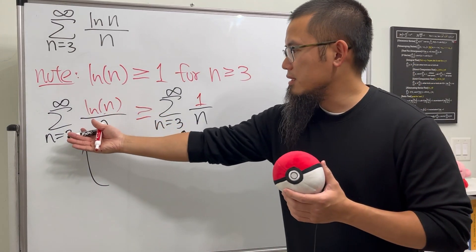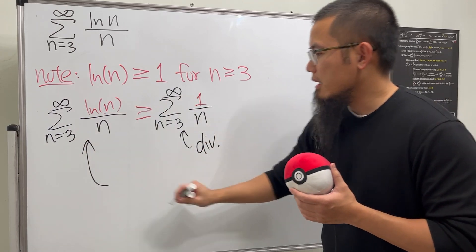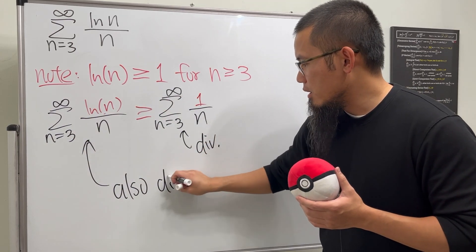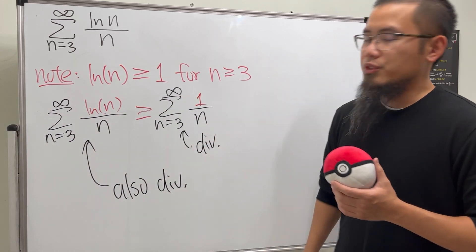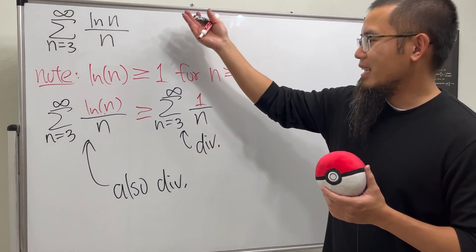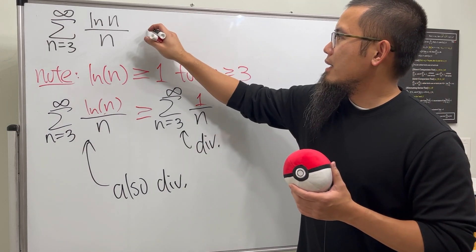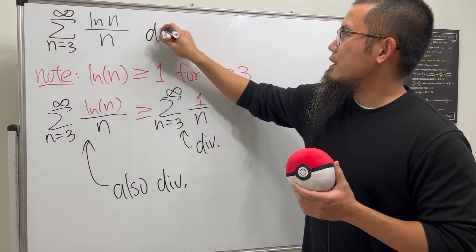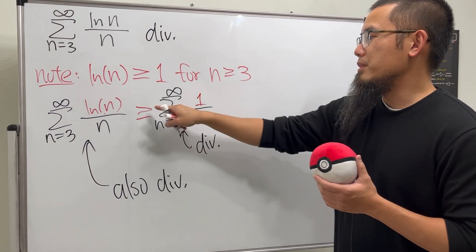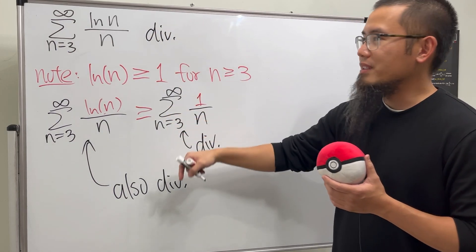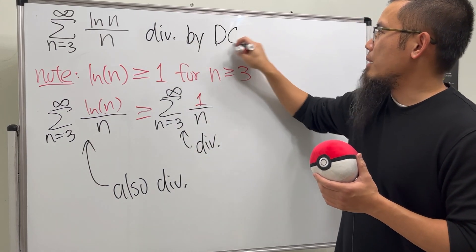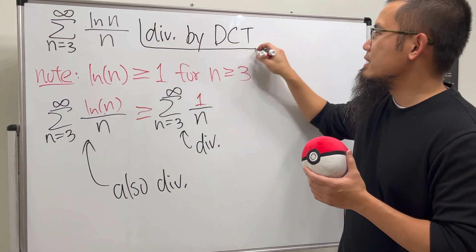Since the original series is bigger than the harmonic series, which diverges, the original series also diverges. What we are doing here is the direct comparison test, so we conclude: diverges by the direct comparison test.